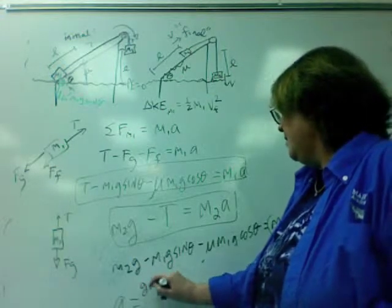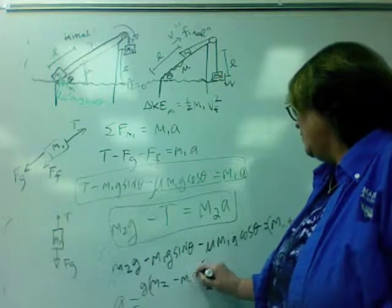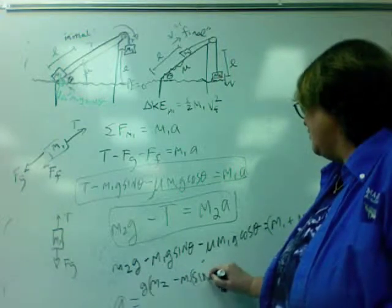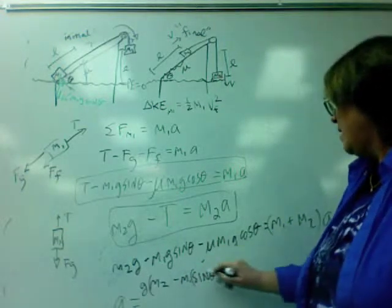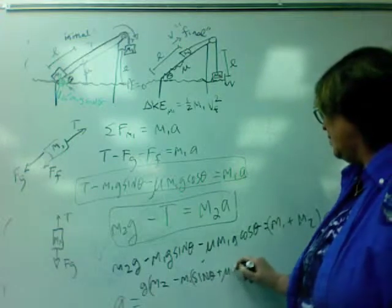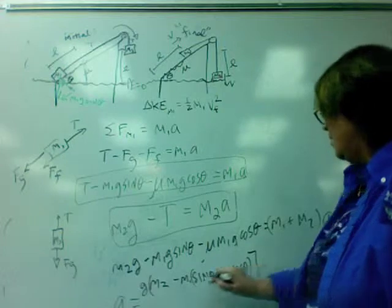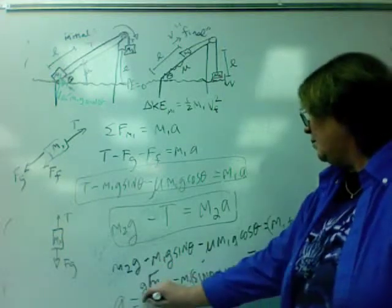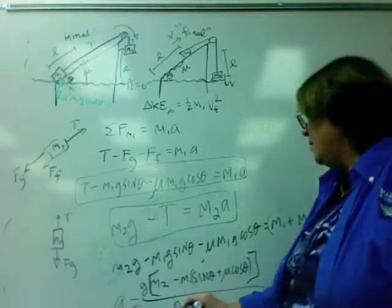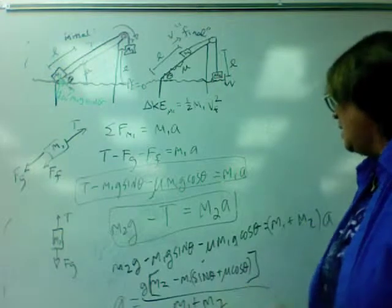I'm going to factor out a G minus M1 sine theta. I'm even going to factor out the M1 minus those plus. Here we've got our mu cosine. I'll go ahead and make that big bracket, big girl brackets, divided by M1 plus M2.